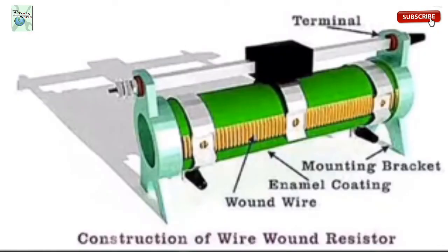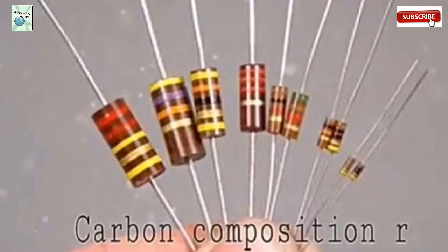Next type: carbon composition resistors. These are the old type of resistor, made up from carbon and insulating material, usually ceramic. Due to the high price, these resistors are no longer used in most applications.